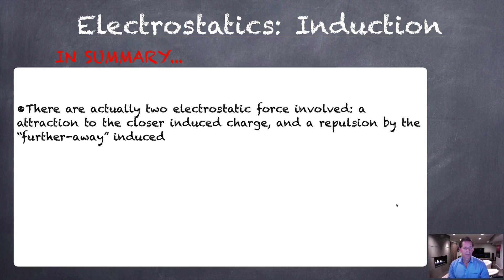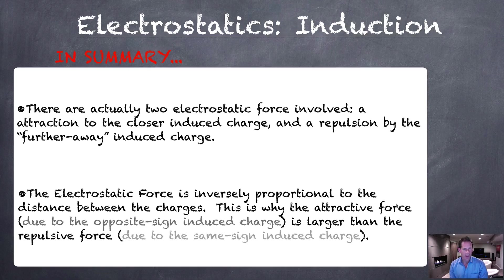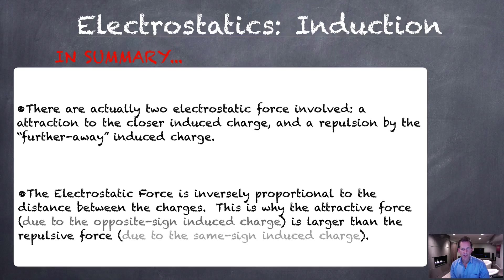In summary, when we're dealing with induction, there are actually two electrostatic forces involved: an attraction to the closer induced charge (on the piece of wood, that was the positive side) and a repulsion by the further-away induced charge (the negative side of the piece of wood). The electrostatic force is inversely proportional to the distance between the charges — if the distance gets bigger, the force gets weaker. This is why the attractive force, due to the opposite-sign induced charge, is larger than the repulsive force due to the same-sign induced charge. If that sounds complex, link that statement back to what you saw with the piece of wood.